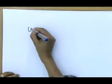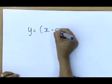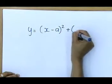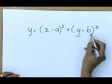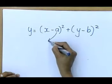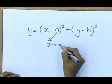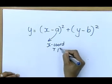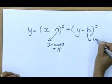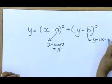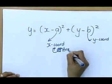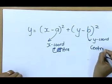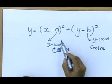y equals (x minus a)² plus (y minus b)². I turned it around, everybody. Sorry for that. What is the a? The x-coordinate of my center. What is the b? The y-coordinate of my center. Very important.